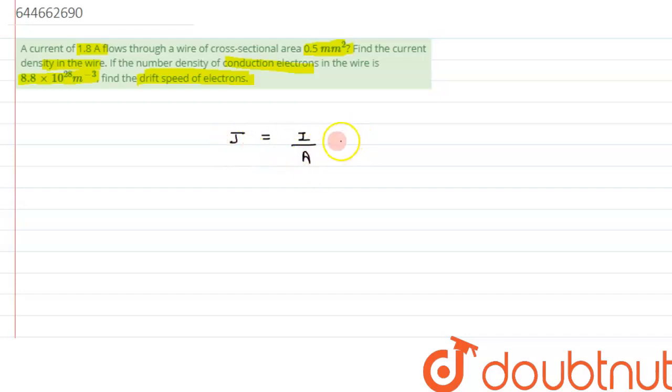This is the value of J, the current density, and we have to just substitute the value. The current is given as 1.8 ampere, dividing it by 0.5 mm square. So this comes out to be 0.5 × 10⁻⁶ meter square, and if you solve it, we will get the answer as 3.6 × 10⁶.